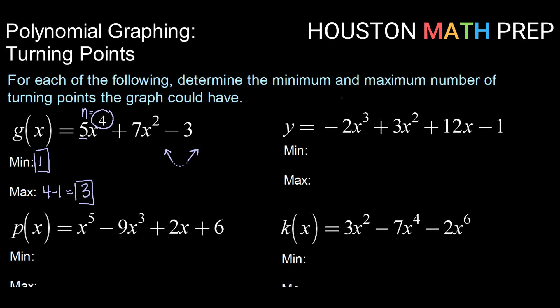Checking out this y over here. We have y equals negative 2x cubed plus 3x squared plus 12x minus 1. Finding our lead term we find that is negative 2x cubed and our degree there is 3. So our maximum number of turning points will be our degree minus 1 or 2.